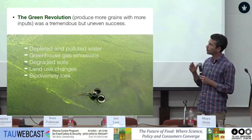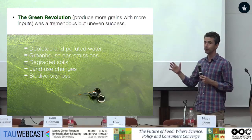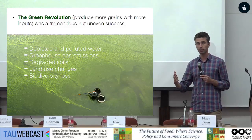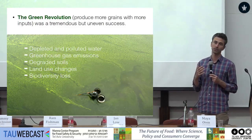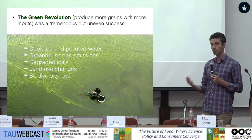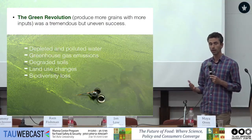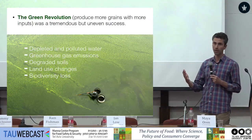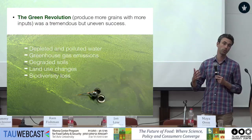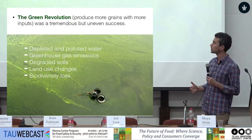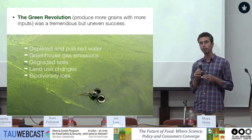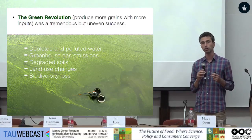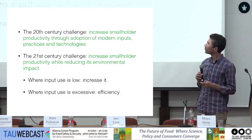We know that the inefficient, excessive use of these inputs is resulting in scarcity of water, pollution of water, and greenhouse gas emissions. Globally, agriculture is contributing up to a third of greenhouse gas emissions. Land use and biodiversity loss are also affected. So it's becoming a major challenge for sustainability.